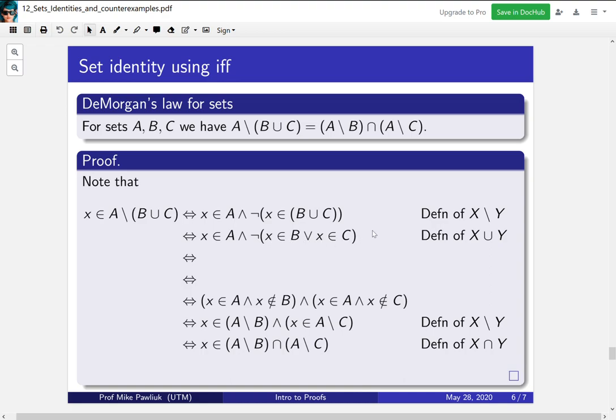This is DeMorgan's Law for logic. So DeMorgan's Law for logic says that if you distribute a negation across an OR, it becomes an AND with two negations. All right, now we're getting pretty close. These two statements look very similar. What's the difference between them? This one has an extra x ∈ A. That's the only difference.